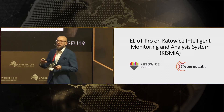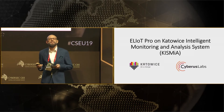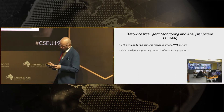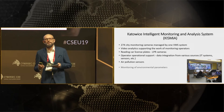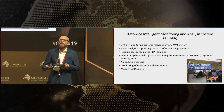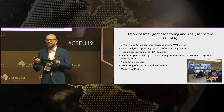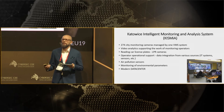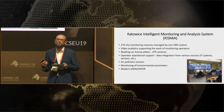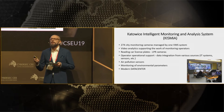One of the smart city flagship projects in our city is the Katowice Intelligent Monitoring and Analysis System, called Kismia. Let me elaborate briefly on this project. The analog video monitoring system has been operating in Katowice since 2001. On residents' request, the camera numbers increased. The analog system was not integrated and required the involvement of many operators. At that time, we decided to create a new intelligent system, and in 2016, at the cost of nearly 3.5 million euros, the Kismia project was launched.